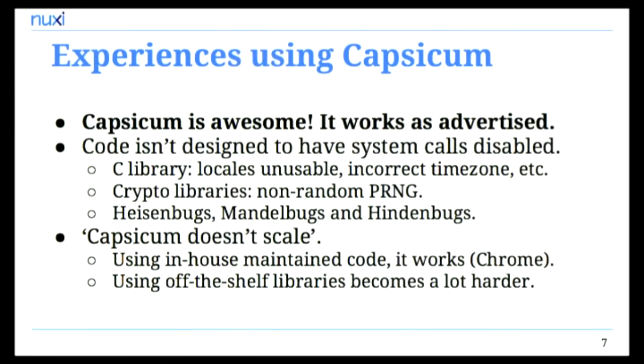Late 2014, I started using Capsicum in a networked storage service I was writing as a pet project. I noticed it really works as advertised — it's robust, well implemented, and gets the job done. But I also realized that code isn't really designed to have system calls disabled. As soon as you call cap_enter, a lot of APIs in the application become broken. This not only applies to Capsicum but also to seccomp BPF on Linux.